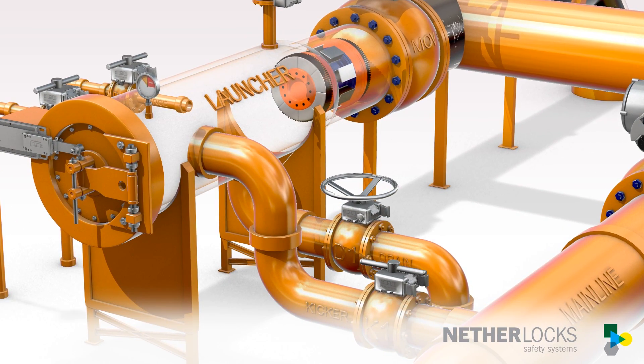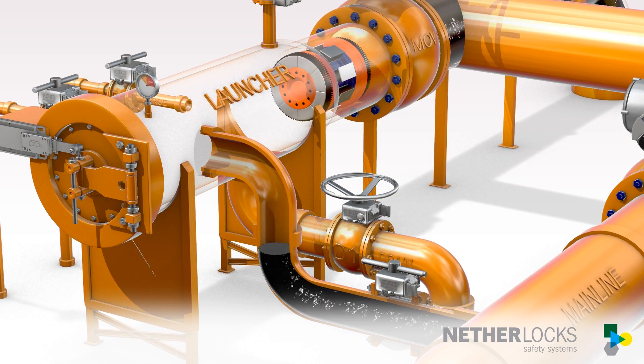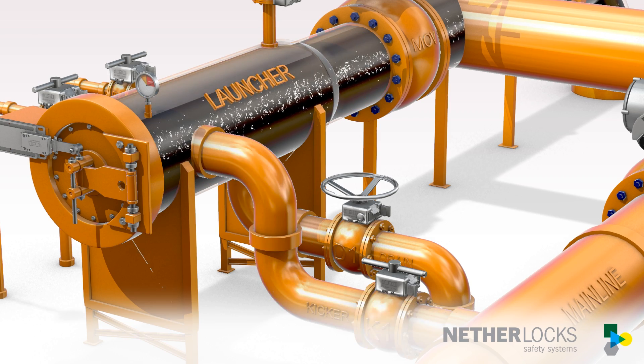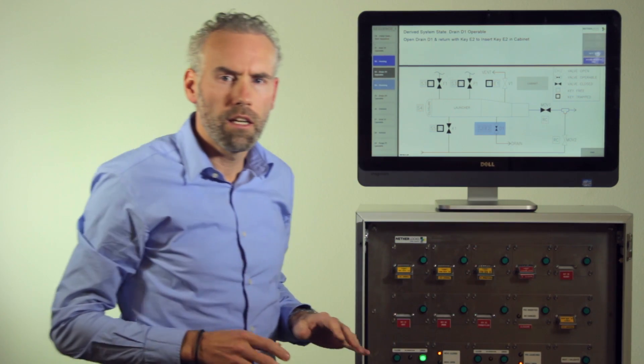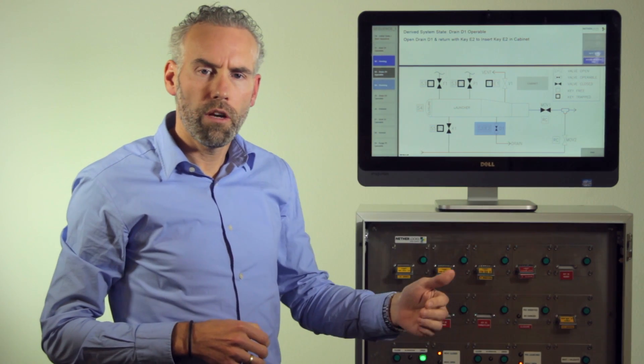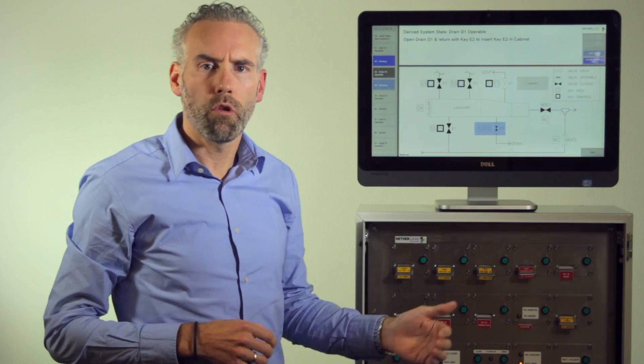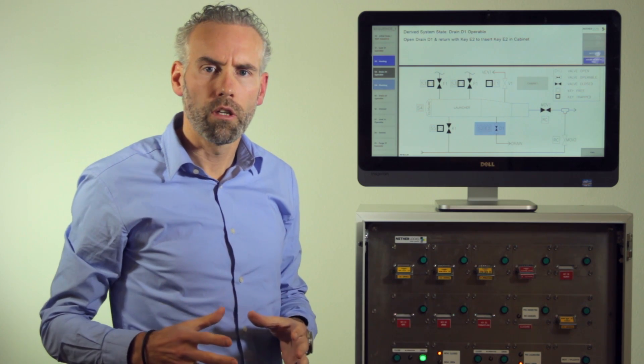I have now opened the kicker line valve and the vessel is filling up with liquid and I'm returning the key into the cabinet. At this stage we have gone through the whole sequence of manual operated valves and the door.